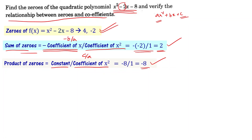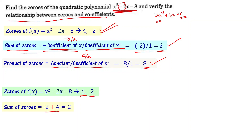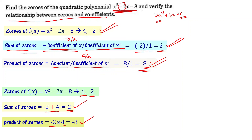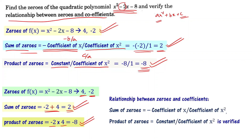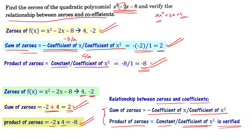Now using our obtained zeros 4 and minus 2: the sum of zeros is 4 plus minus 2, which equals 2. This matches the relation, which also gives 2. The product of zeros is minus 2 times 4, which equals minus 8 — and both are the same. We have verified that the relationships between zeros and coefficients are correct. The sum of zeros equals negative of coefficient of x divided by coefficient of x squared, and product of zeros equals constant divided by coefficient of x squared.